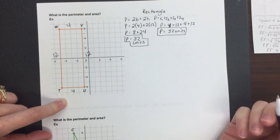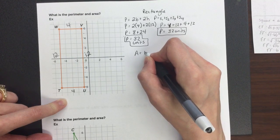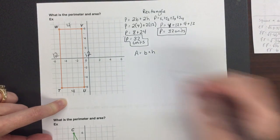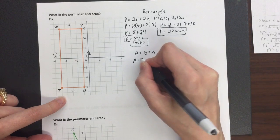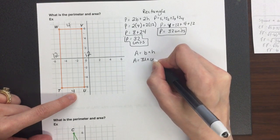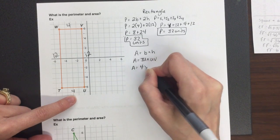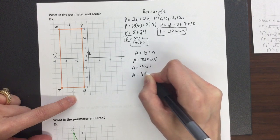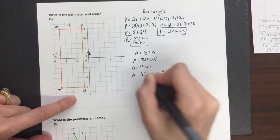They're also asking for the area. The area of a rectangle equals base times height. So area equals the base TU times the height UV, which is four times twelve. The area equals 48 units squared.